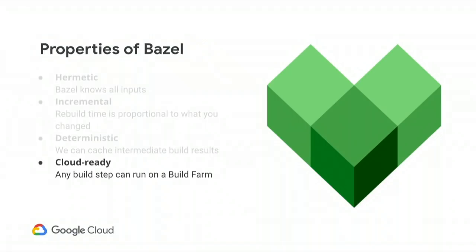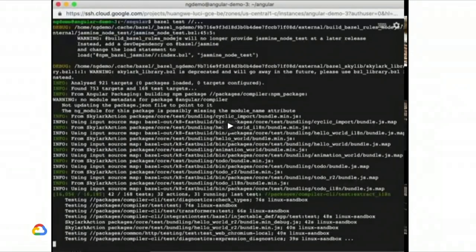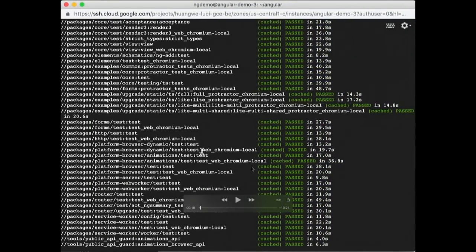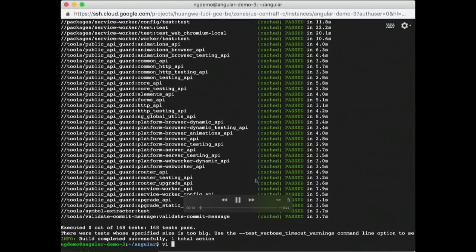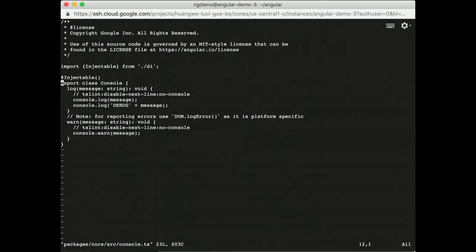The final property of Bazel we're going to go over is that it's fully cloud-ready. Because of all the previous properties — its hermeticity and its determinism — not only can you store each of the intermediary artifacts, but you can also do the work on the cloud. All of the build actions can happen in the cloud. In this next example, as before, we're imagining starting from a clean slate where everything has been cached. But this time, instead of changing a test file, this is editing a source file at the very bottom of the project — nearly everything in this project depends on this source file.